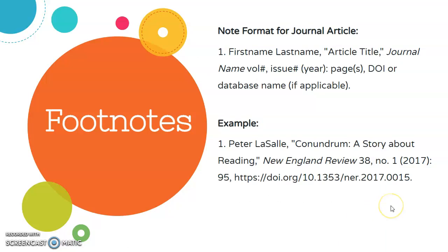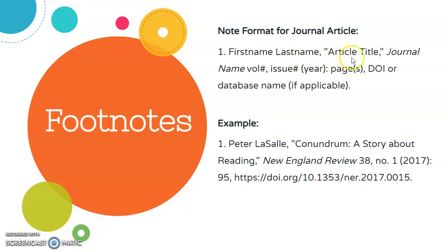Footnotes have a specific format that they follow. The Chicago note format for a journal article includes the number of the note, followed by various pieces of data: the author's first name, last name, name of the article, name of the journal, volume number, issue number, year, pages, and the DOI or the database name, if applicable.